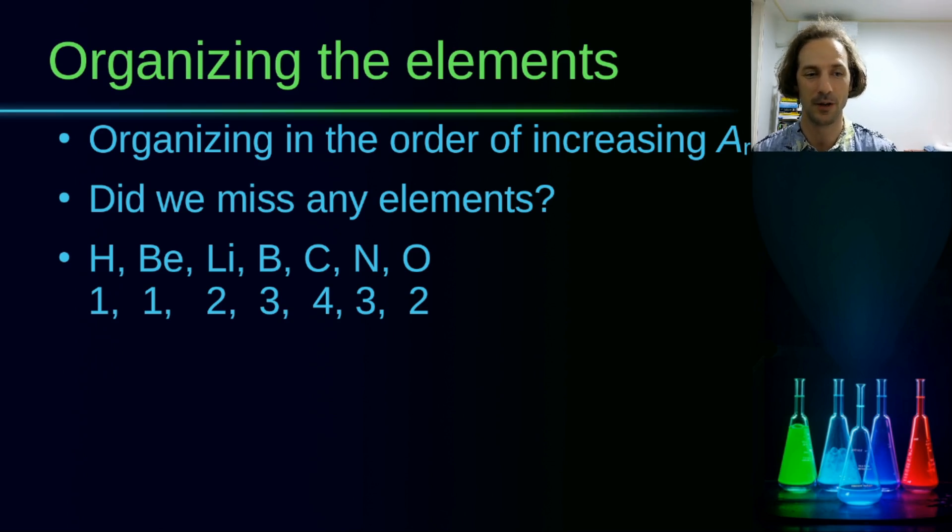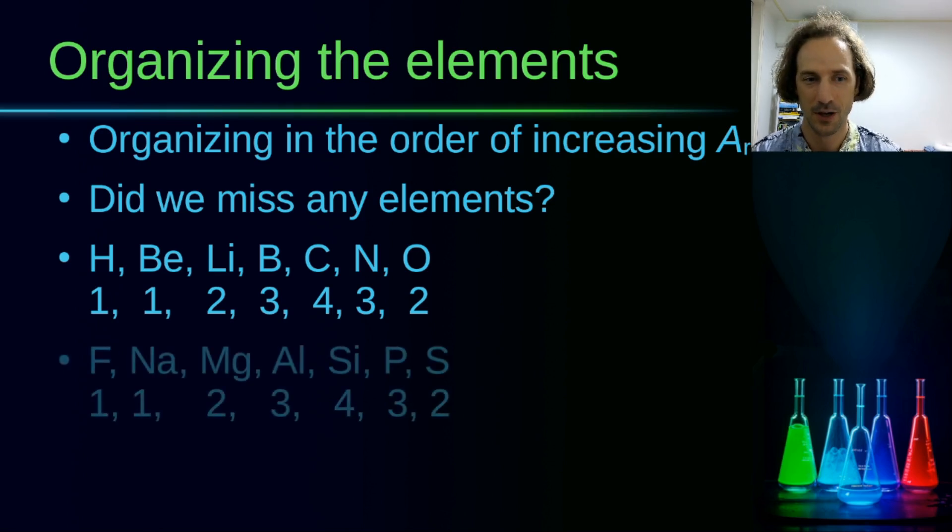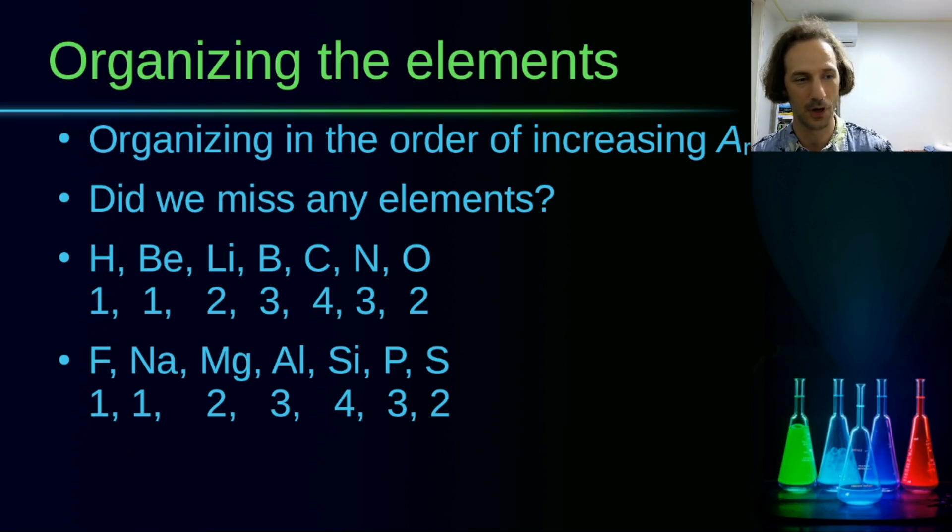If we move to the next element it was fluorine which has only a valence of one again. And then you go sodium one, magnesium two, aluminum three, silicon four, and then go down again: phosphorus three, sulfur two, and then chlorine one, and then potassium one again. Based on this you can see that there is some kind of systematic change in the valence of the element.